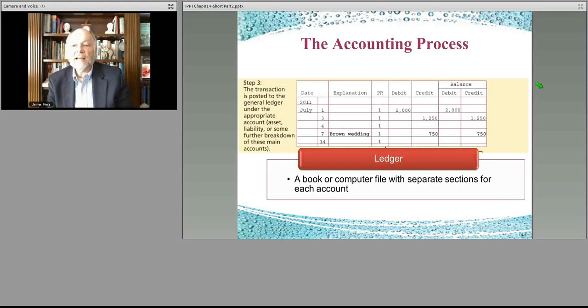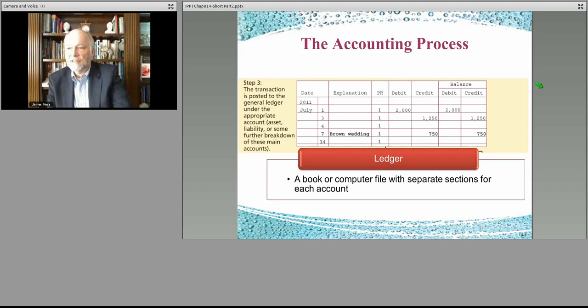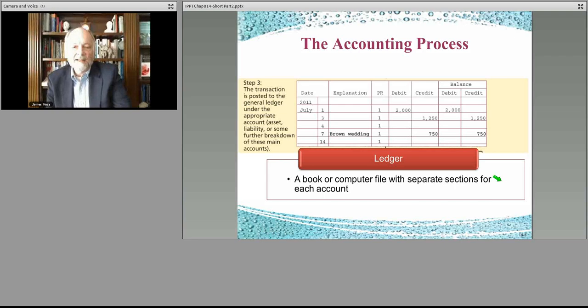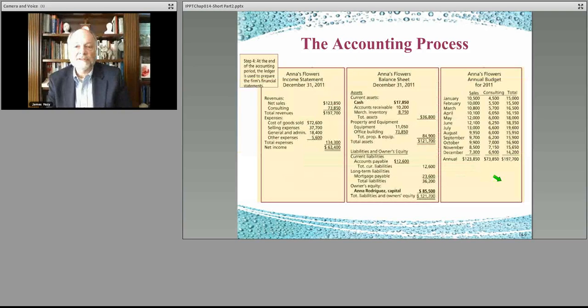The second thing that you do is you enter that particular transaction that you identify into your general ledger, and you can see, again, the Brown wedding. The $750 that you have received, and that's part of your balance. So you can see how you're keeping track in your ledger of how all of these different pieces fit together. And then the next thing you do is you build your financial statements.